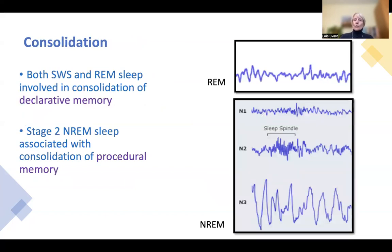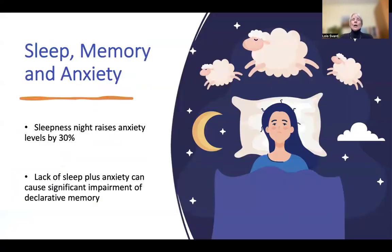So, both slow-wave sleep and REM sleep are involved in the consolidation of declarative memory, and stage 2 non-REM sleep is associated with the consolidation of procedural memory.